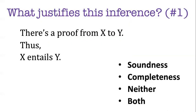So here's an argument. There's a proof of x to y, therefore x entails y. What I want you to do is assess that inference. Do you think that soundness, completeness, neither or both justify that inference? So pause your videos now and see if you can decide.